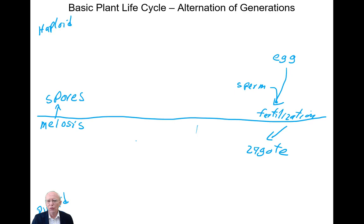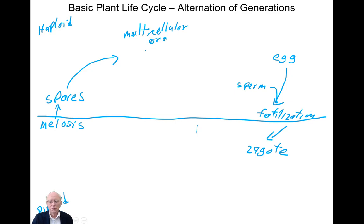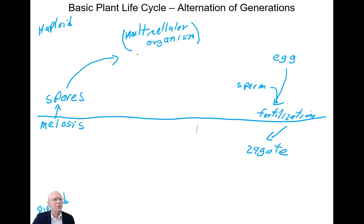Spores are unicellular, have no flagella, and are haploid. They are going to divide to produce a multicellular organism — the haploid portion of the life cycle. There is an official name for this type of organism: the gamete-bearing plant, or gametophyte. The gametophyte is going to produce the egg and the sperm.